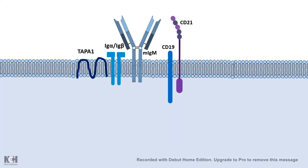Here is a portion of the surface of the B cell. We can see the membrane-bound IgM, which is the B cell receptor. Along with the B cell receptor, many co-receptors and auxiliary receptors are present, such as CD21, CD19, and TAPA1. One of the most important components in this signaling complex is Igα and Igβ.